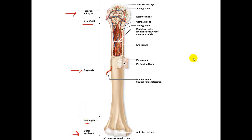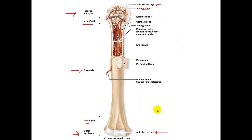Now as you look at the long bone, you are going to see quite a few different parts. On the edges of the bone you have articular cartilage, which is made of hyaline cartilage. Those are on both ends, and this is to help reduce friction between bones at the joint. You also have the spongy bone, which is found in the epiphyses on both sides, and the spongy bone is where you find the red bone marrow.